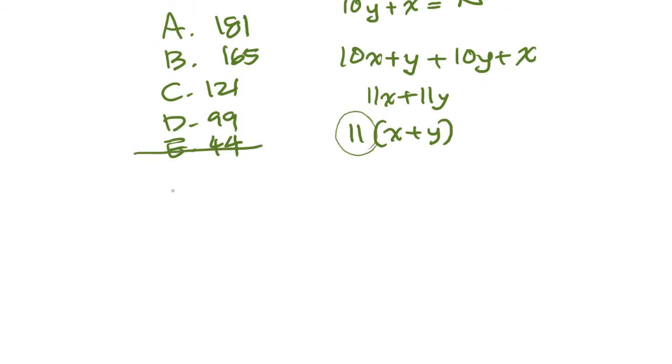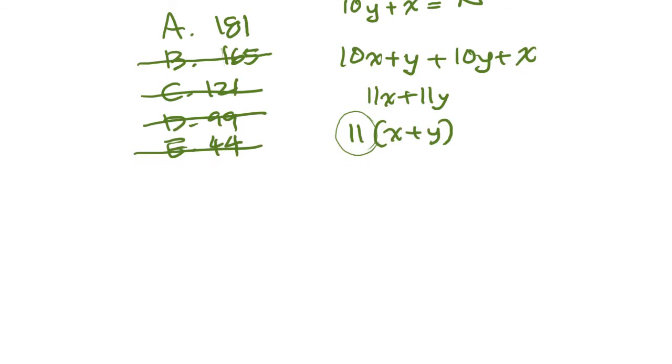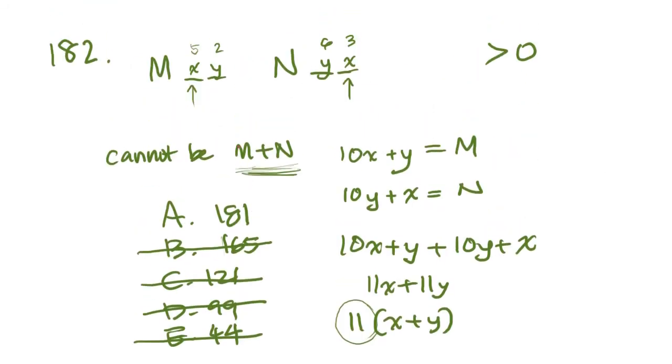So E is divisible by 11. D is, C is. 165, let's see. Well, this number plus this number gets you the middle number, and I talked about that rule in an earlier video. So 165 is definitely divisible by 11. So the only one left is A, and we are looking for something that cannot be M plus N. So A is going to be your correct answer. Boom.